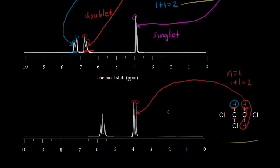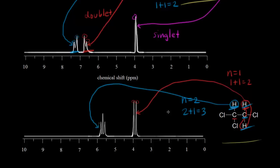What about the signal for the blue proton? How many neighboring protons do we have? We go to the carbon next door and we have one, two neighbors. So for the blue proton, n is equal to two. We expect n plus one peaks: two plus one is equal to three. So three peaks for this signal — one, two, and three. Three peaks, which is called a triplet.